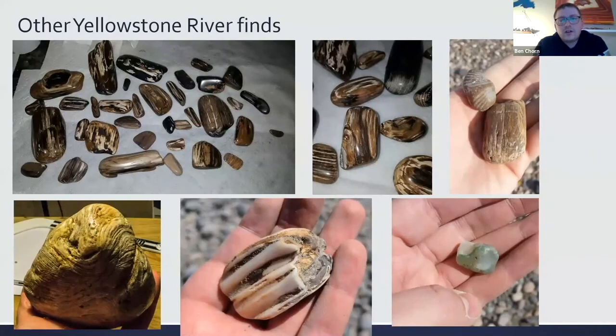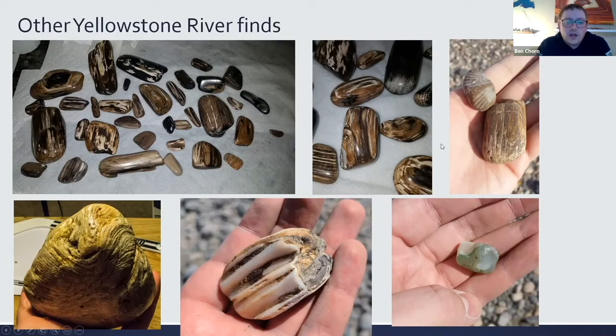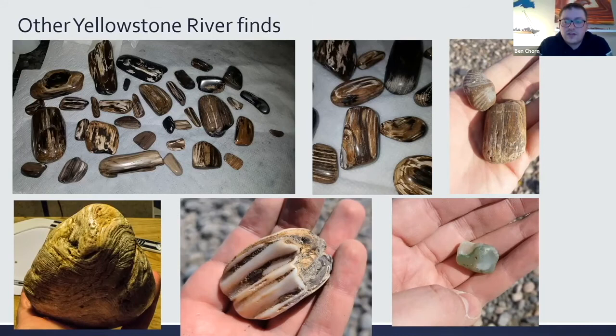While looking along the Yellowstone River, there are many other things you can find. Petrified wood is largely composed of silica and polishes very easily. Other finds include a brachiopod fossil, a large stromatolite, bison teeth, and people have even reported finding full bison skulls in the gravels. You can also sometimes find more green-colored agates.